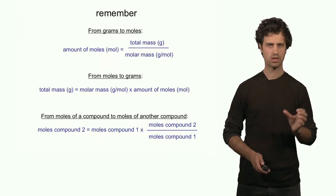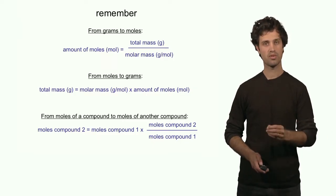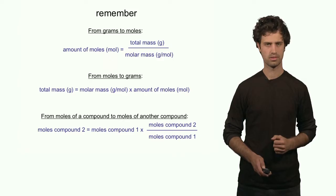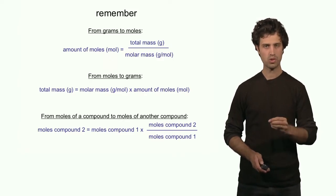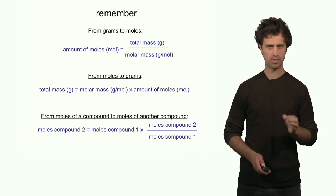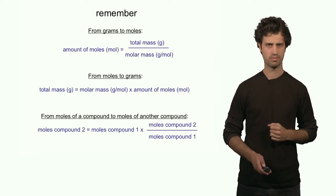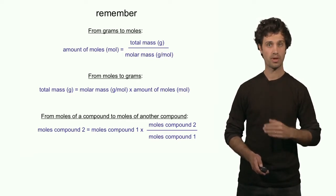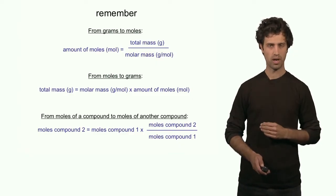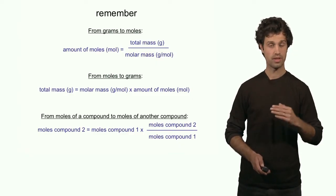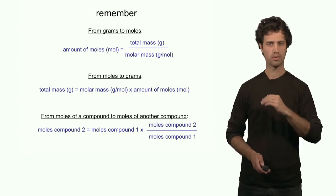A third conversion is the conversion of the number of moles of one compound into the number of moles of another compound. For instance, the number of moles of compound 2 equals the number of moles of compound 1 times the mole ratio, where the number of moles of compound 2 appears on top and the number of moles of compound 1 appears at the bottom. This ensures that the unit of moles of compound 1 will cancel out.